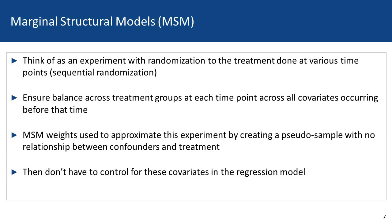I should note that marginal structural models can also be used in cases of randomized control trials — for example, to evaluate the impact of adherence to assigned treatment on outcomes. But the application we're talking about today is focused on observational data, using the marginal structural model to mimic a sequential randomization, or randomization to treatment at various time points.